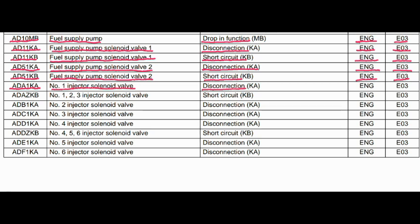Code AD1KA. Where is the problem? Number 1 injector solenoid valve. What is the problem? Disconnection. Engine control is related to this fault, and the action code is E03. Code ADAZKB — where is the problem? Number 2 injector solenoid valve. What is the problem? Short circuit. Engine control system is related to this fault, and the action code is E03.